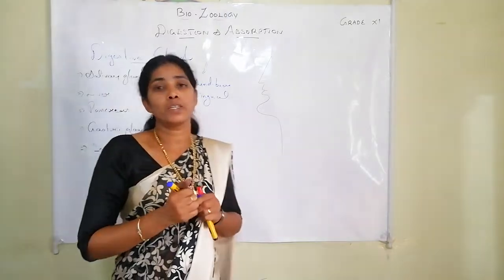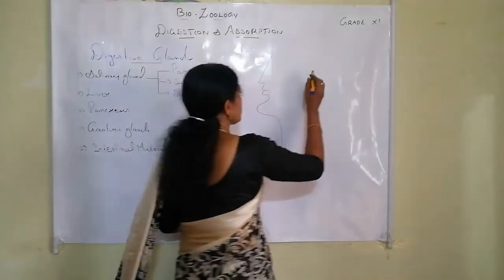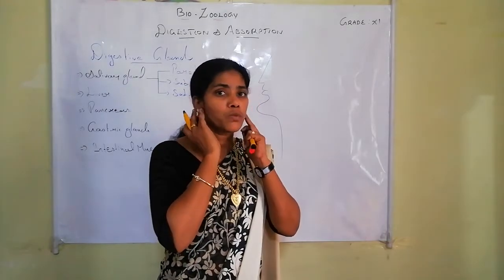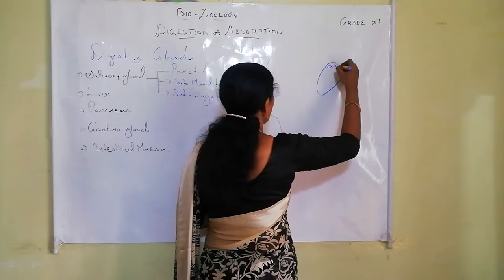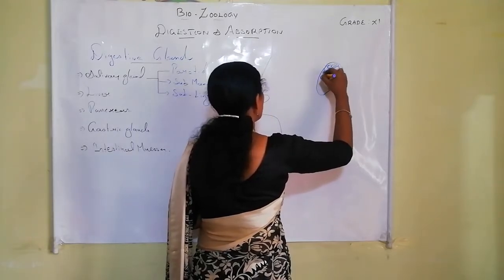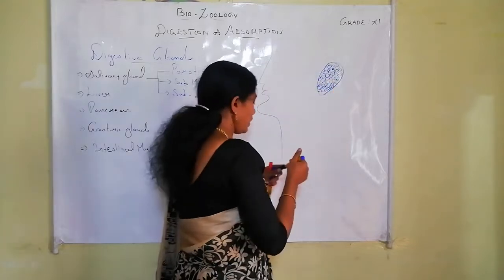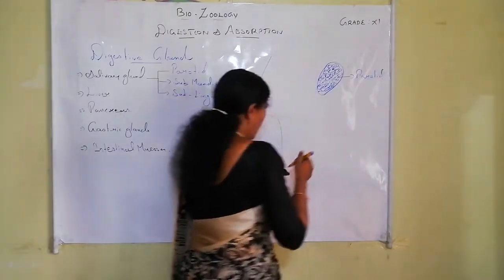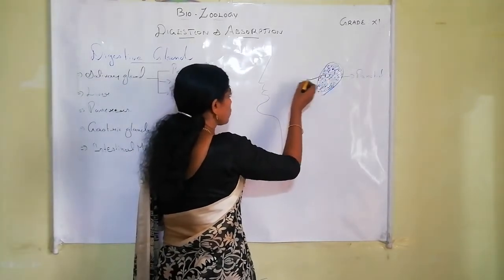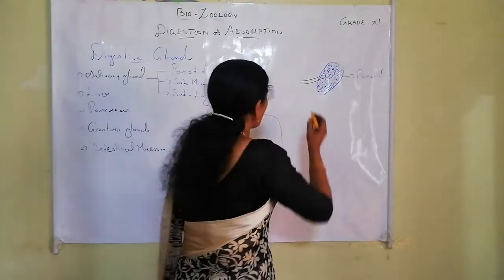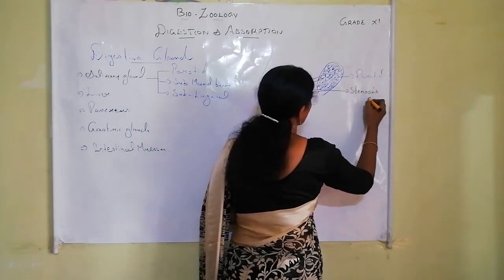The parotid gland is the largest salivary gland, located in the cheek region near the ear. It consists of many lobes and secretes saliva into the buccal cavity through its duct, known as Stensen's duct.